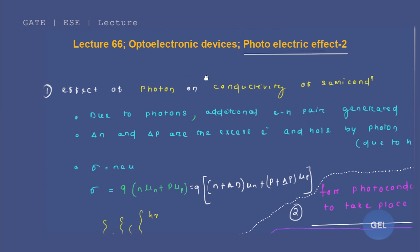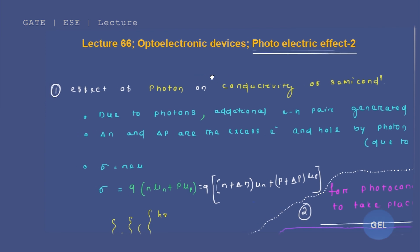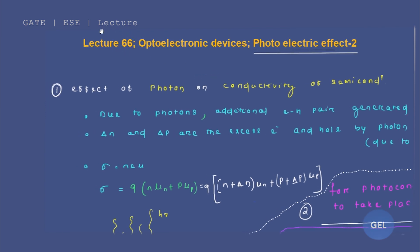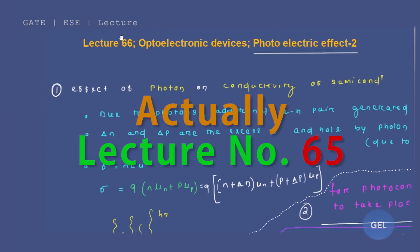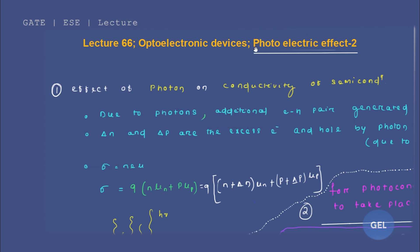Welcome to GL Gate ESE lecture. We are in lecture number 66 of EDC. This is the fourth module on optoelectronic devices, and this is the second video lecture for the chapter on the photoelectric effect. With this video lecture, we are going to finish this chapter on the photoelectric effect. In the next video lecture, we will get into the photodiode concept.